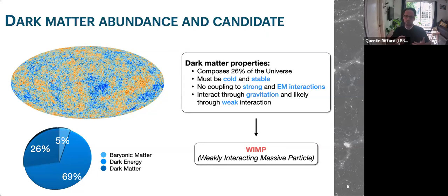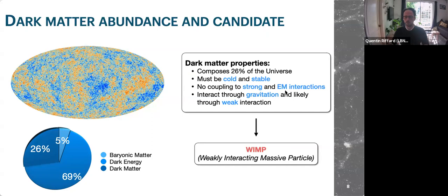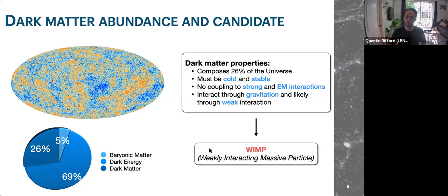This slide shows what we know about dark matter. Thanks to the Planck measurement, it comprises about 26% of our universe's total content. It must be cold and stable, otherwise we would not see structure formation. It doesn't couple to strong or electromagnetic interactions — otherwise we would detect it differently — and it interacts through gravitation and likely through the weak interaction. From this, we can define one candidate for dark matter: the WIMP, Weakly Interactive Massive Particle, which is a massive particle with all those properties and could be a dark matter candidate.